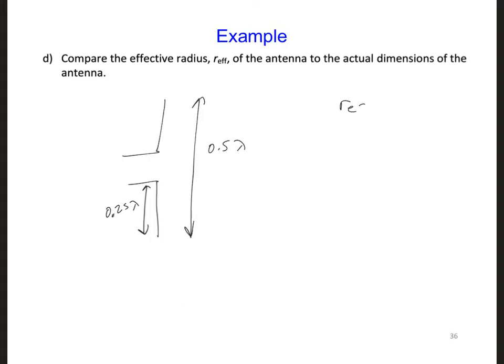So the effective radius that we just calculated is 0.2 lambda. So if we were looking straight at this dipole antenna,